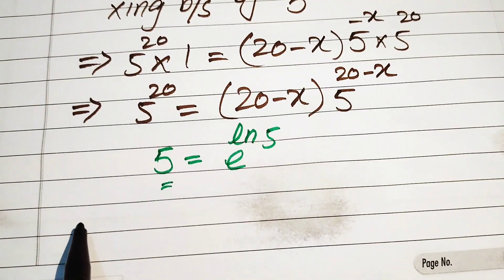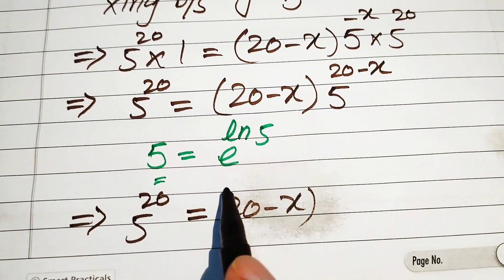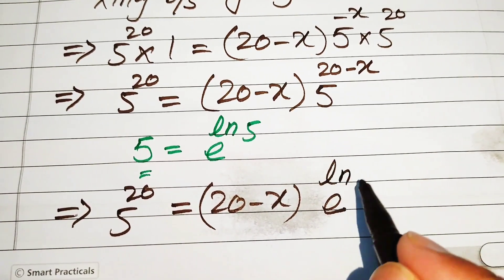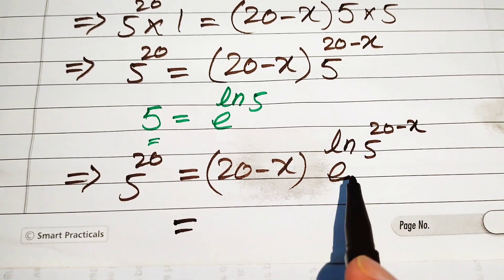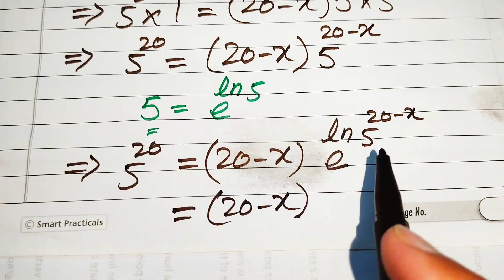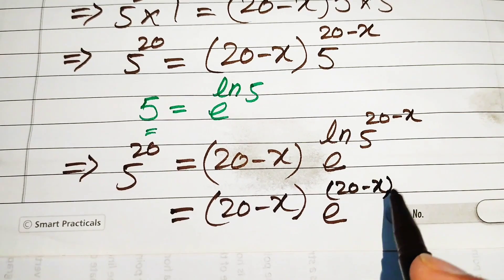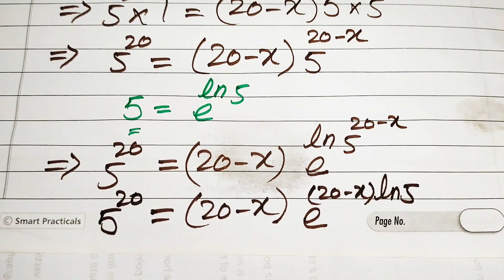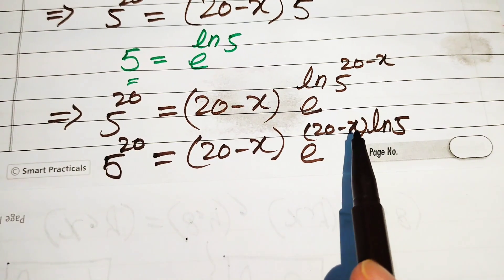Our equation becomes 5 to the power of 20 equals 20 minus x times e to the power of log of 5 to the power of 20 minus x. Using the logarithmic property, we move the exponent to the front of the log, giving 20 minus x into log of 5. So the exponent of e is 20 minus x into log 5.